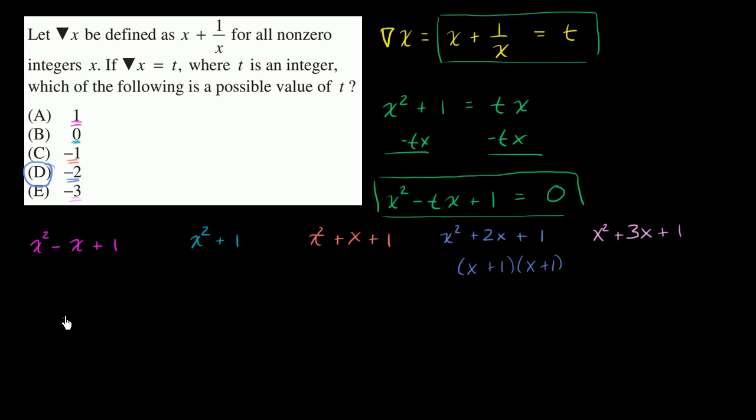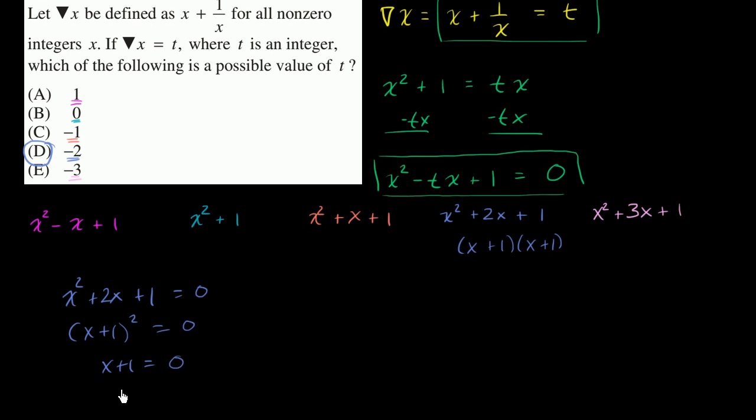We could say that x squared minus t, which is plus two, plus two x plus one is equal to zero. The left-hand side is just x plus one squared is equal to zero, which means that x plus one is equal to zero.